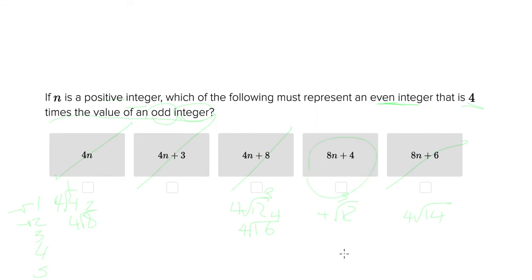And this is the only option we have left. But just to check, if you were to plug in to here, you would get sixteen plus four, which is twenty. And if you divide twenty by four, you get five, which is again an odd integer. So this is the answer.